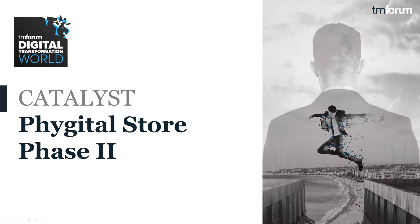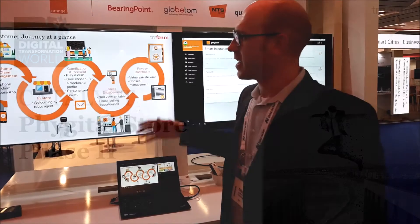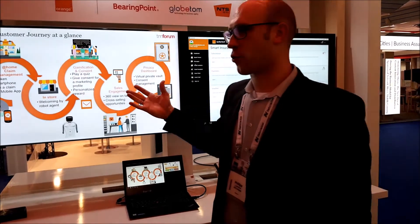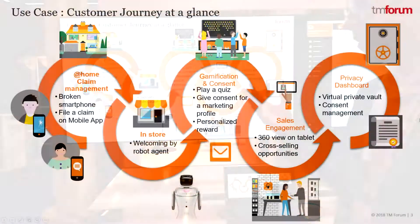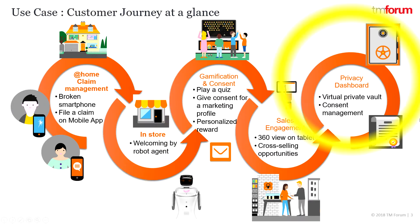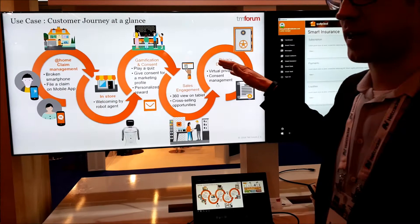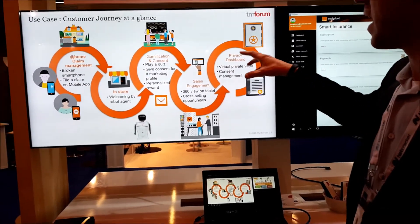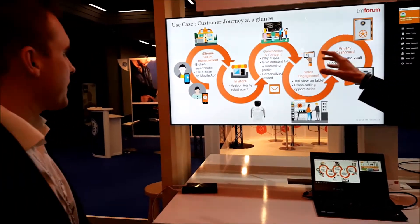Hello and welcome to the Digital Store, which is phase two of our Catalyst. In this, we tell the story of Mary. She is a mother of two, and unfortunately her son has dropped the phone. So she wants to file a claim, and she's doing that via the privacy dashboard of PolyCloud, where she answers all the things she needs to file it and to send everything to the insurance company.